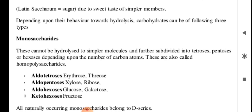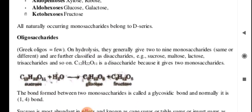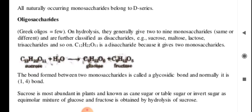These are also called homo polysaccharides. The structure of monosaccharides includes aldotetroses (erythrose, threose), aldopentoses (xylose, ribose), and aldohexoses (glucose, galactose), as well as keto hexoses such as fructose — fructose being a ketone.